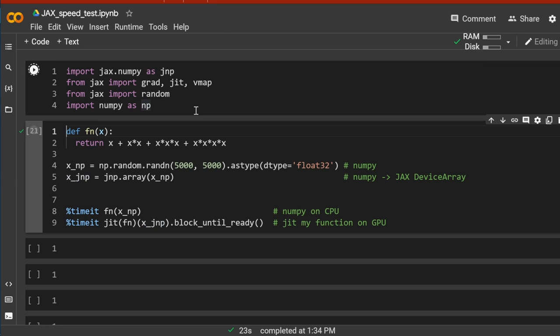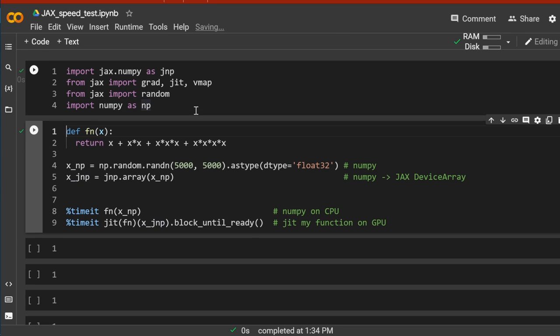So very first element, we just import our JAX and our NumPy, and then we define a function. This is a typical function. I say add x plus x square plus x cube plus x to the fourth, and then I define my x. X should be of course 5000 times 5000 array, and I just transfer this NumPy array to a JAX device array with jnp.array. This is it.